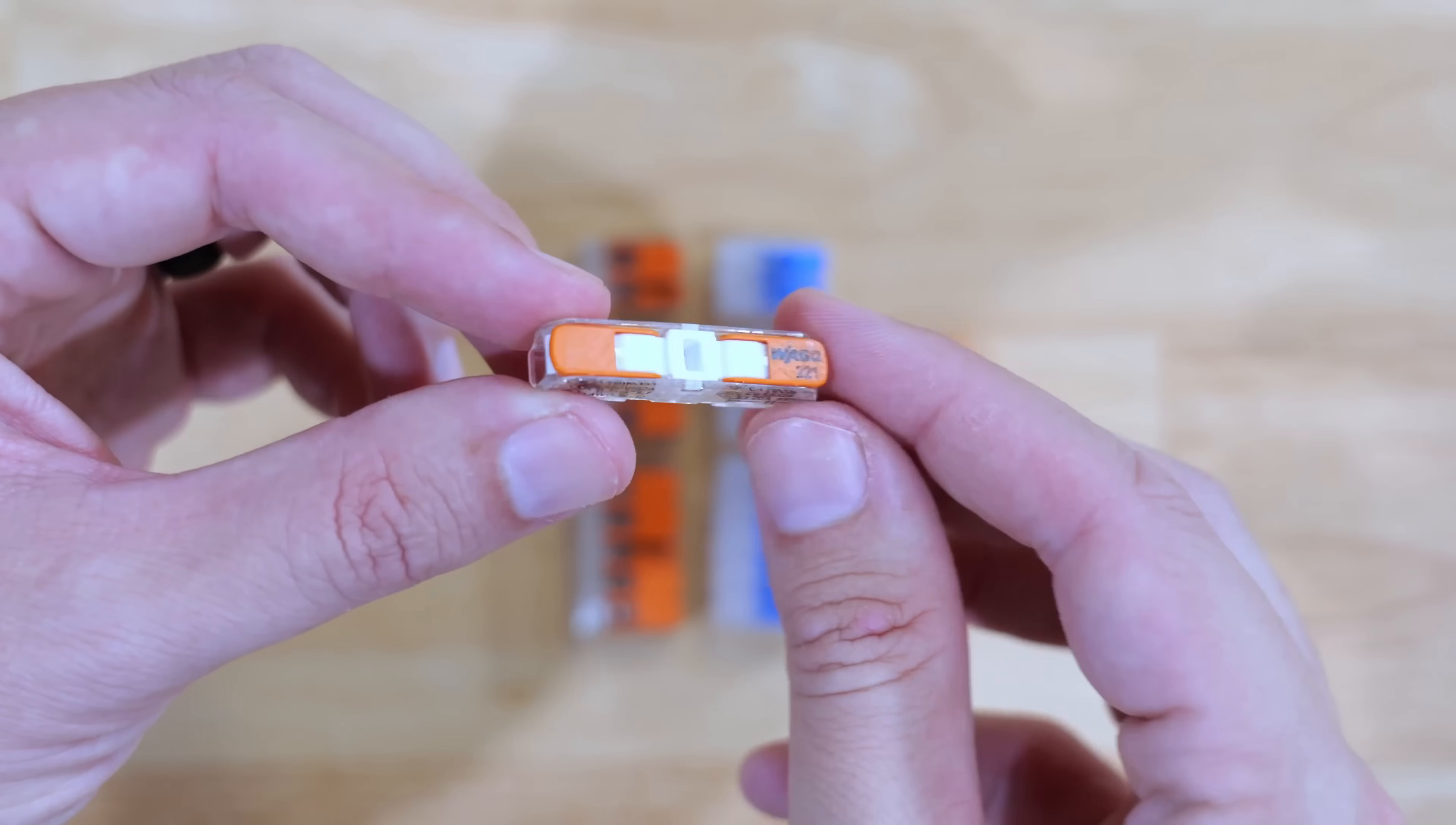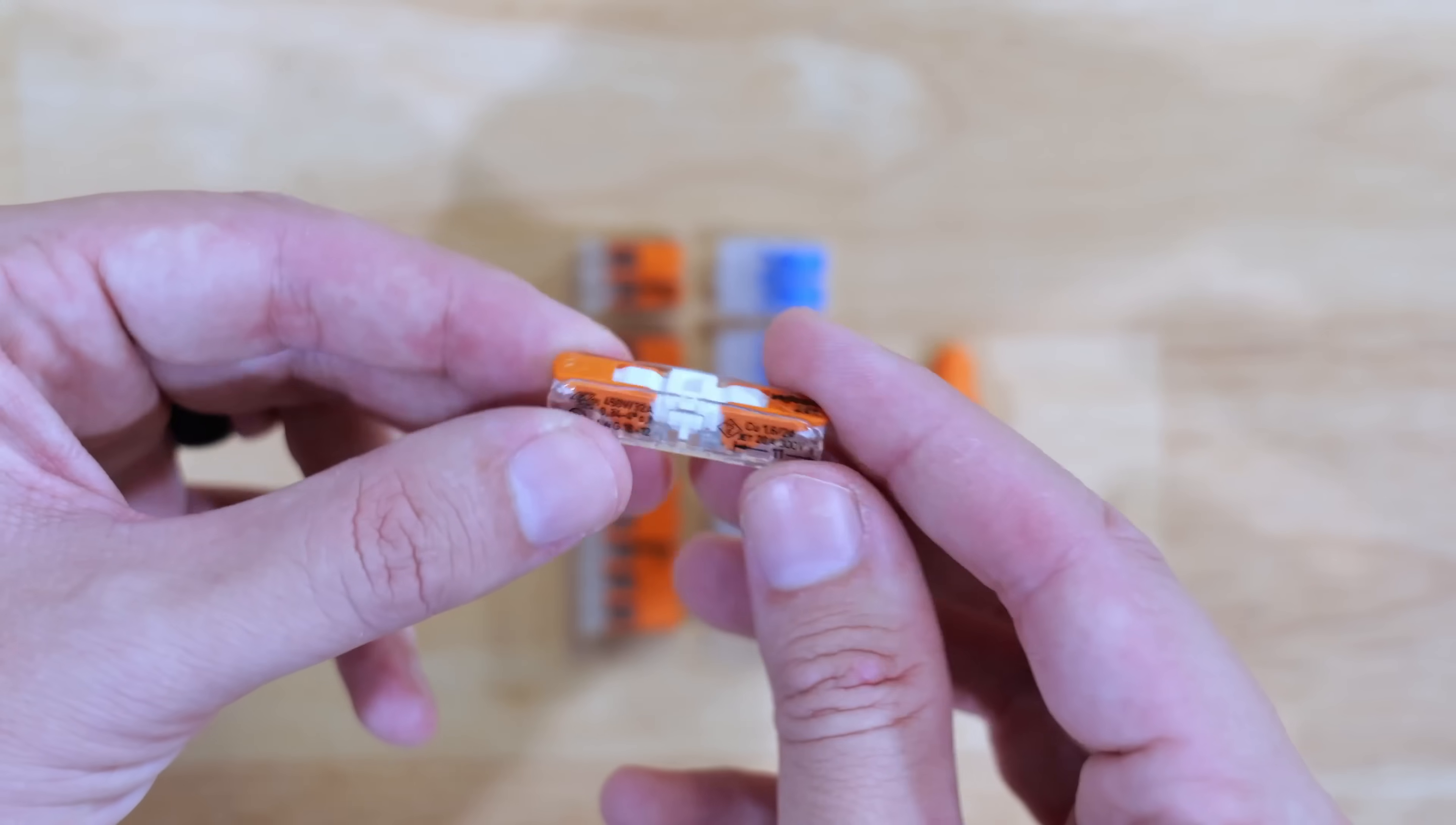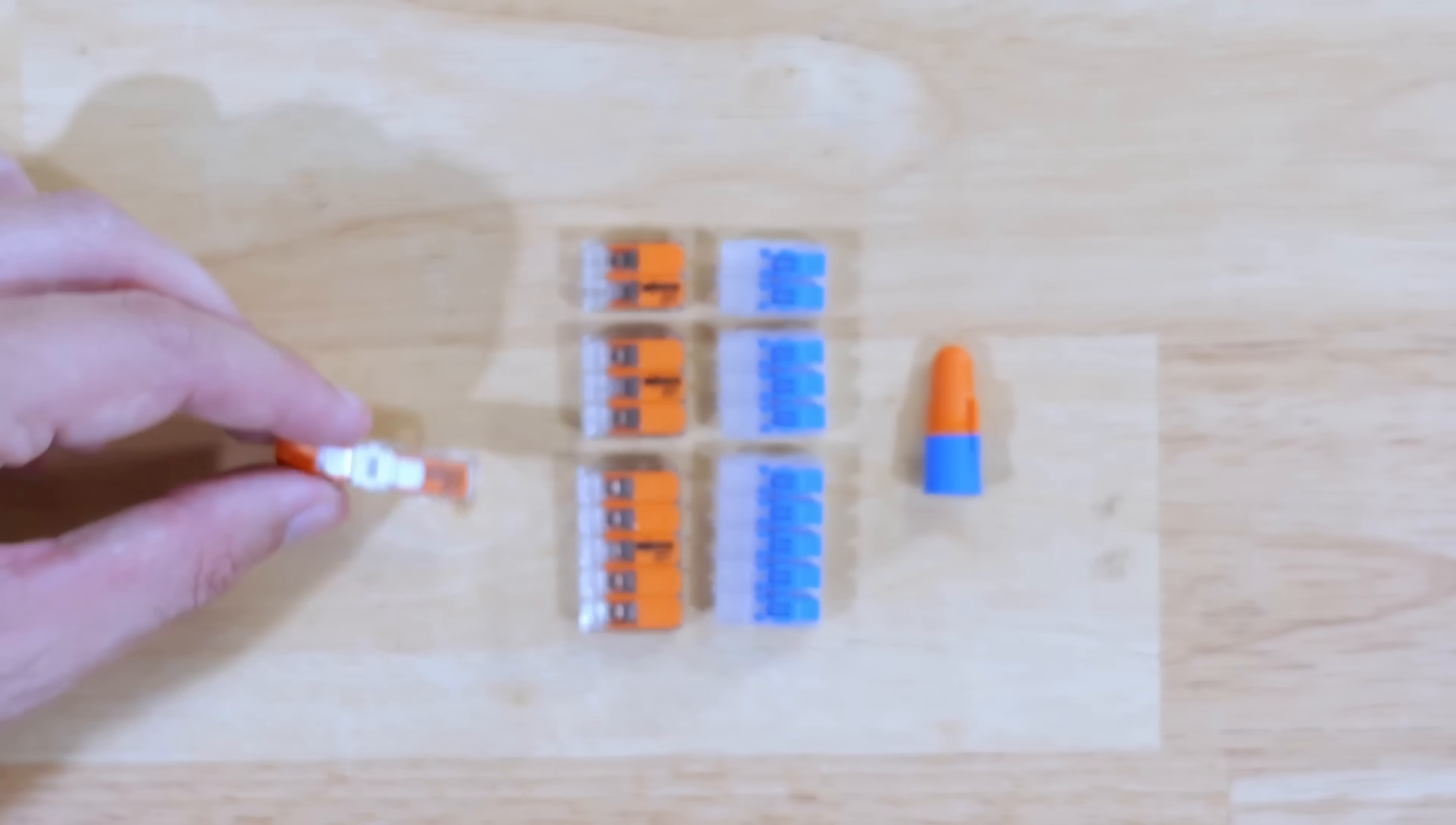Now this is one that I really like to use. It is basically for like butt joints. They're fantastic for light fixtures, fans, extending out wires because you're able to just insert one wire over here, insert one wire over here. It's just super easy. No crimping involved or anything like that.